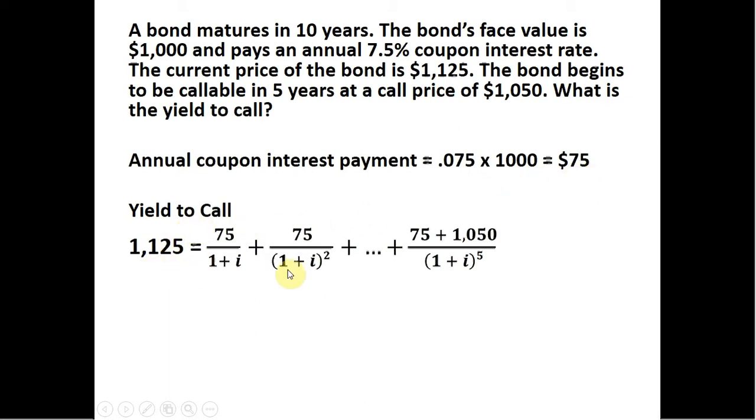Setting up the formula here for the yield to call, on the left-hand side we have the bond's current price, which is nothing more than the discounted value of these interest payments each year, plus the year when the bond becomes callable. And when the bond becomes callable, not only does the bondholder get the $75 interest payment, the bondholder receives a call price of $1,050. So these are going to discount back here five periods.